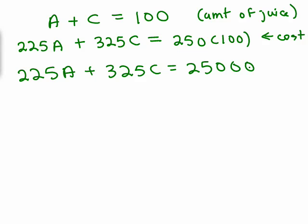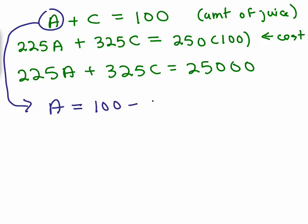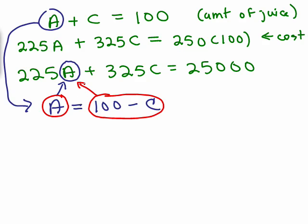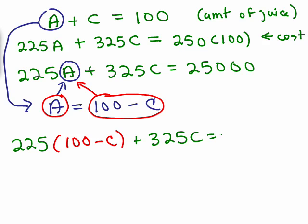It's up to you which variable you want to solve for. I'm going to solve for A, so A equals 100 minus C. That's what I plug into the other equation for A. So I'll take 225 times the quantity (100 minus C) plus 325C equals 25,000.